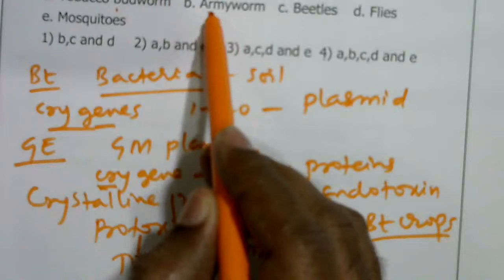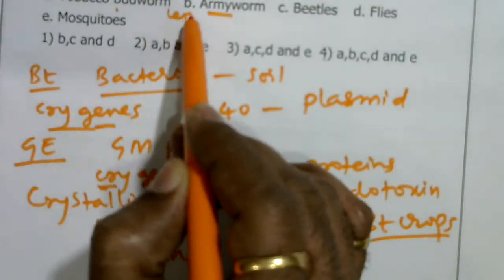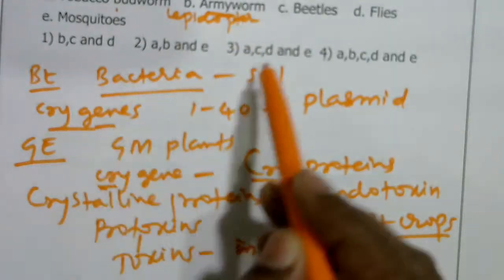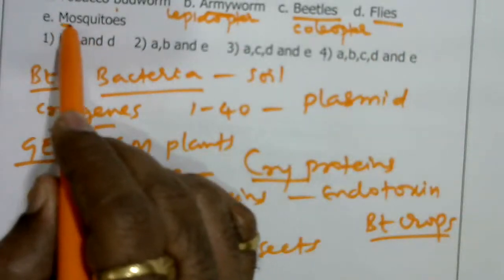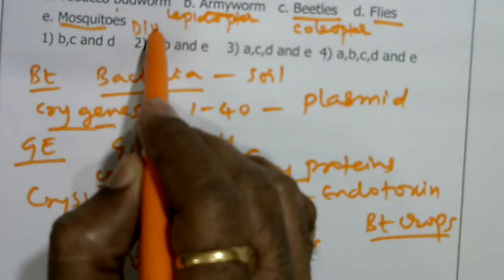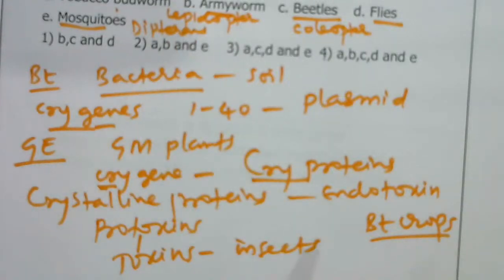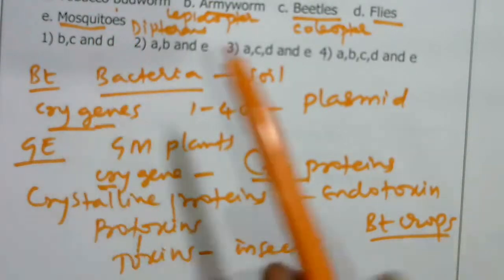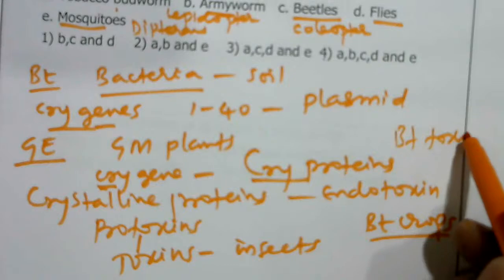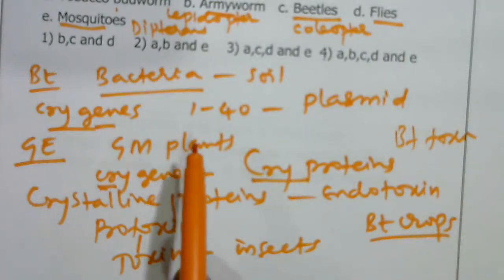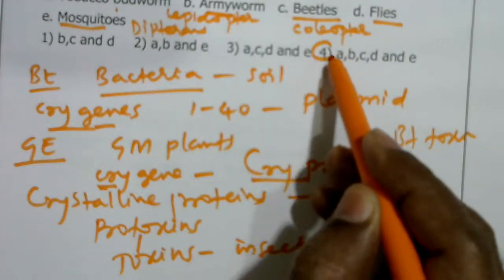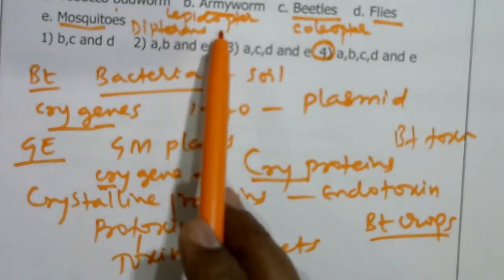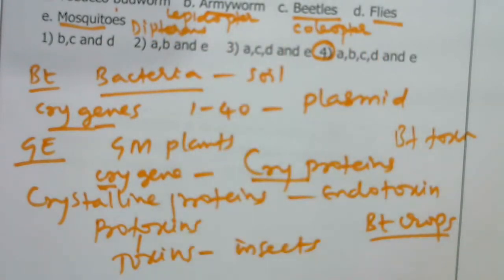The cry genes are effective against different insect groups: tobacco budworms and armyworms belong to Lepidopterans; beetles belong to Coleopterans. Bt toxin, produced from the cry gene present in the plasmid of Bacillus thuringiensis, is effective to kill tobacco budworms, bollworms, beetles, flies, and mosquitoes.